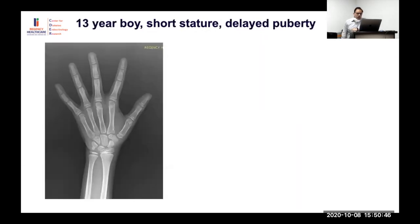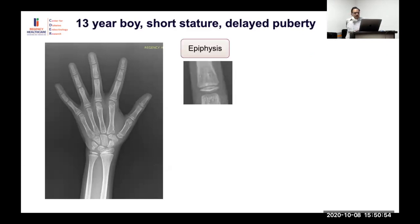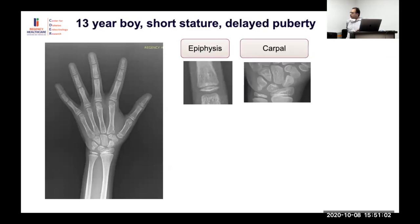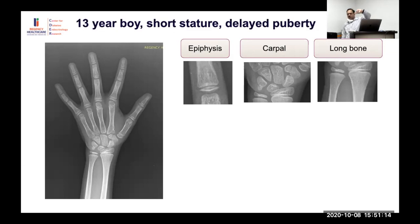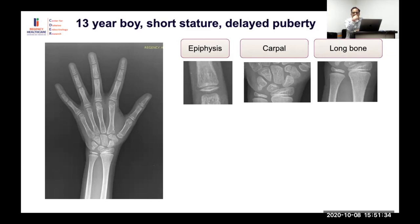Case: thirteen-year-old boy with short stature and delayed puberty. Many bones are present and the carpal bones including pisiform are visible at the lower part. The ulna shows a curve beginning to appear but the styloid process is not yet visible. The white line in radius is not very prominent and radius appears slightly smaller — not near full fusion. Bone age is estimated at around ten to twelve years, most likely eleven.